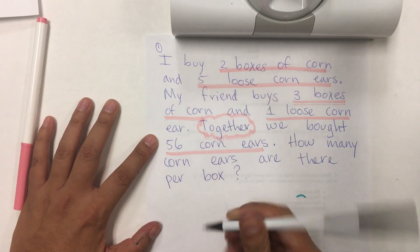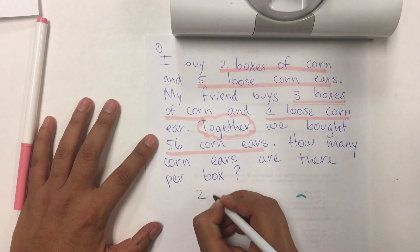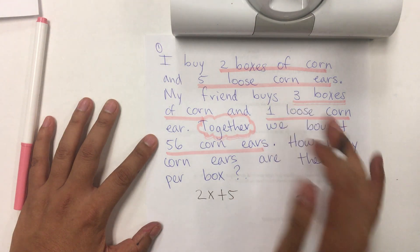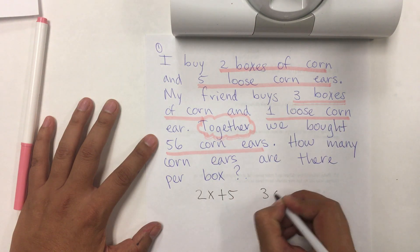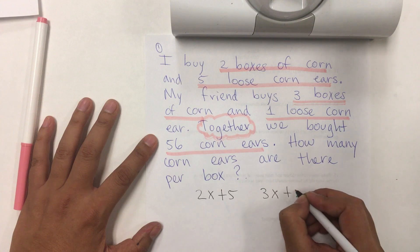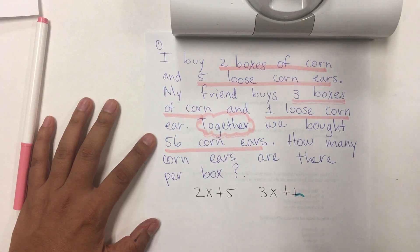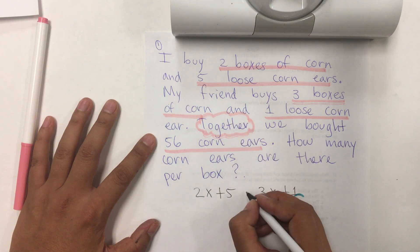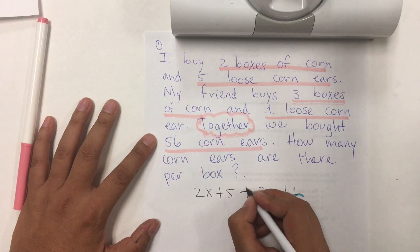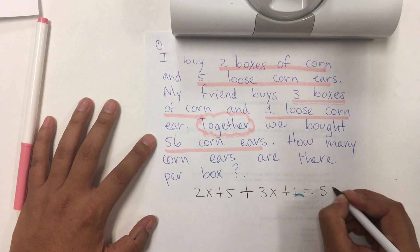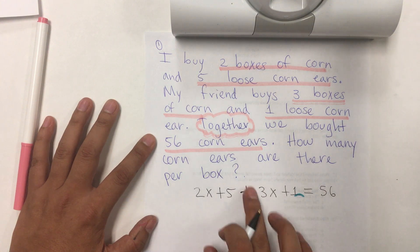So, the 2 boxes of corn and 5 loose ones will be 2x plus 5. My friend has 3 boxes plus 1 loose one. And it says together, it means that we're going to add our corn ears. We have 56. Together, this means plus.